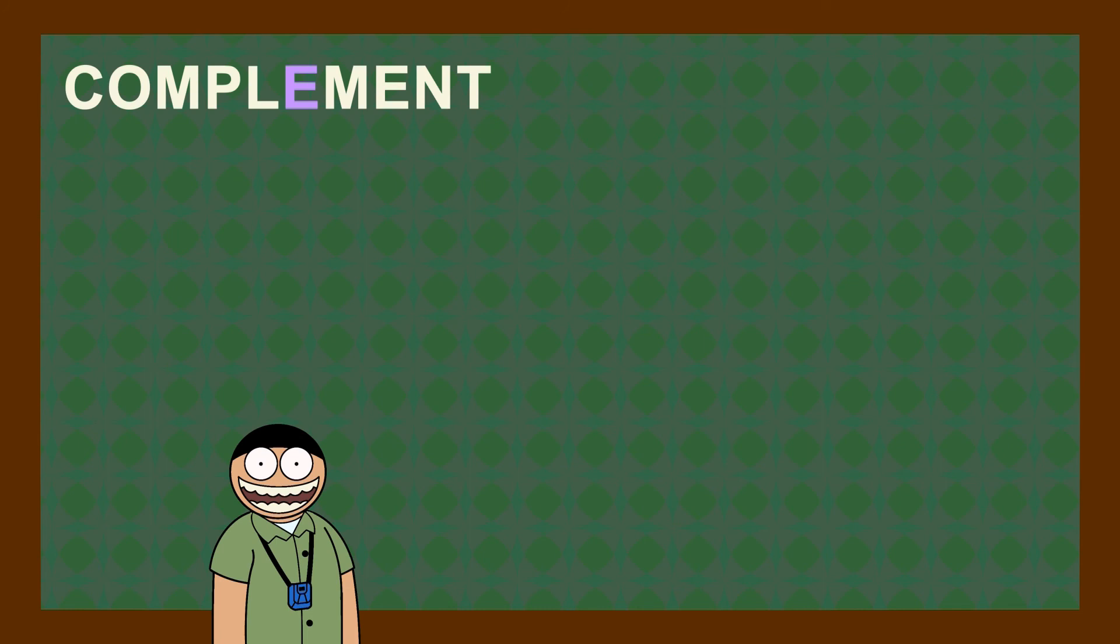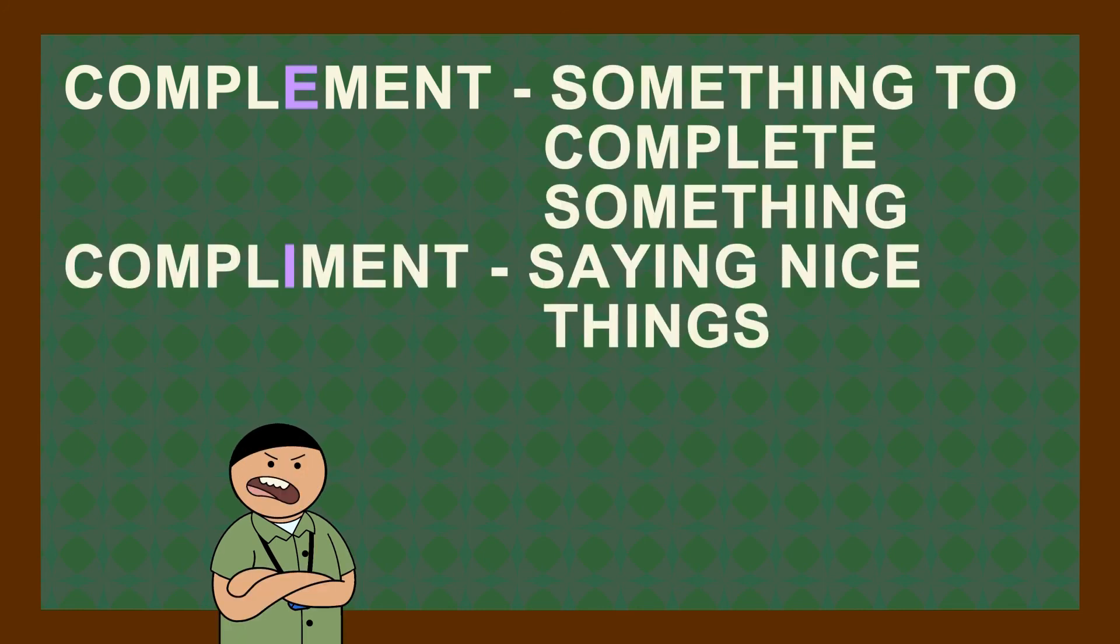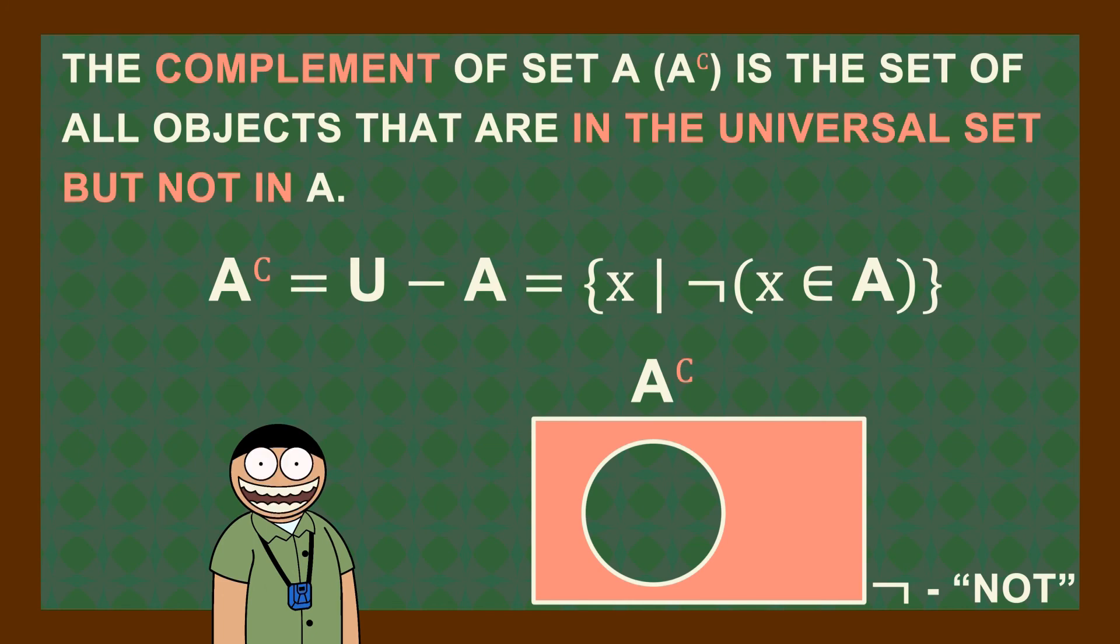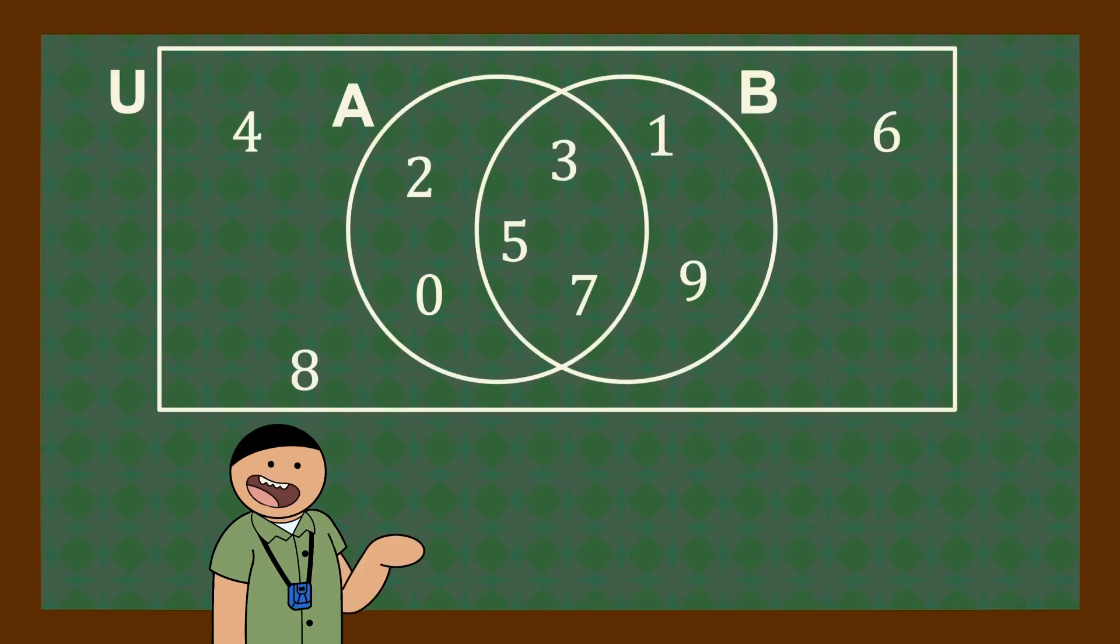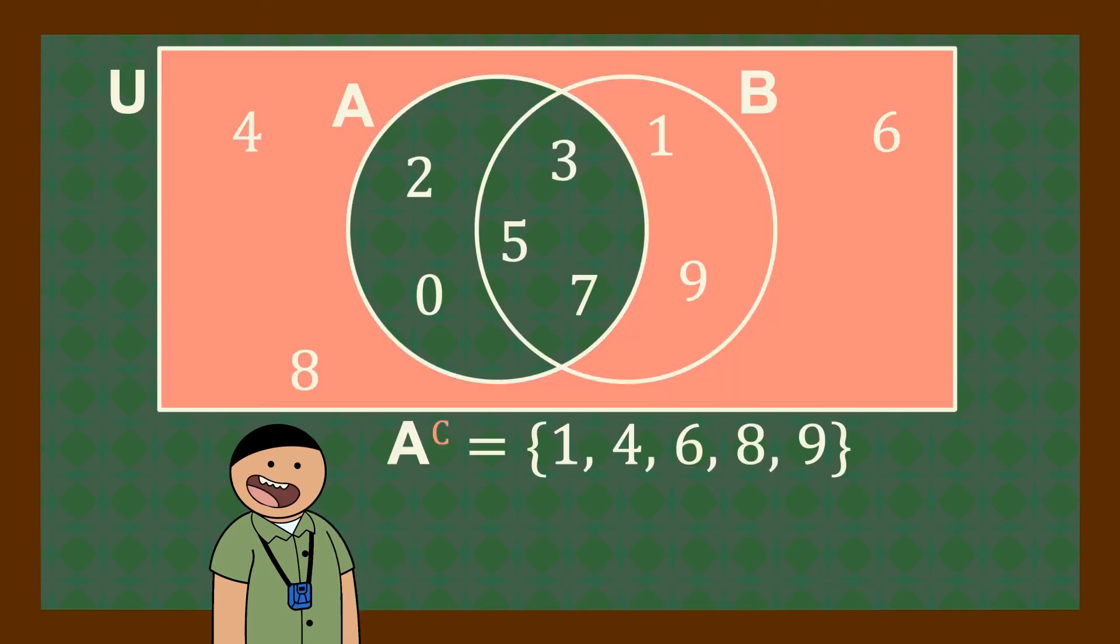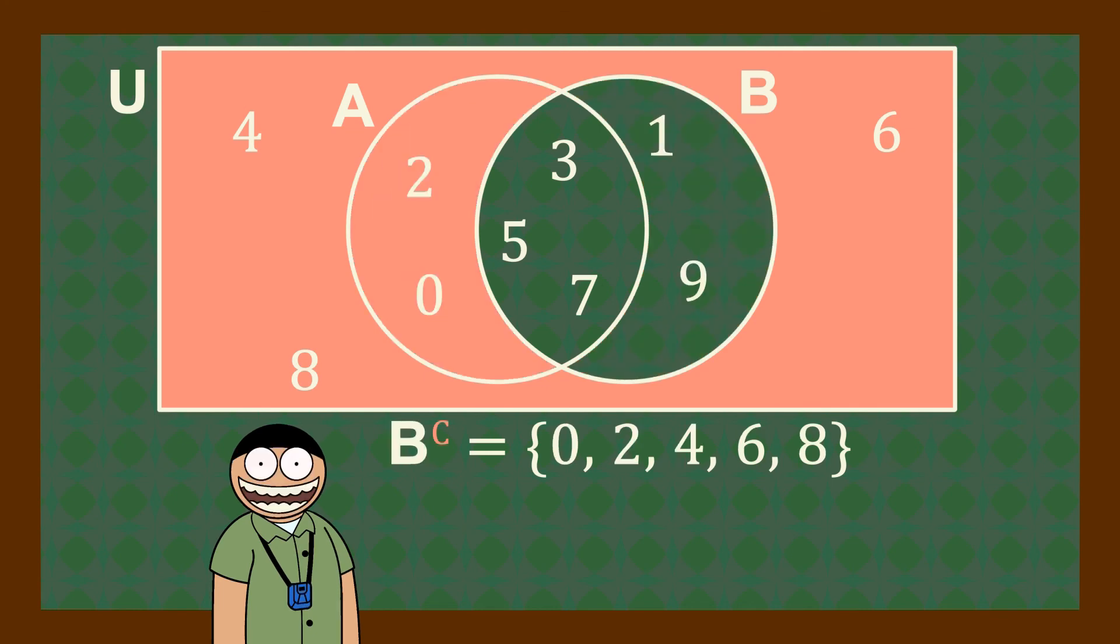The complement, and let me say it's not complement because complement is something to complete something while complement is saying nice things. The complement of set A is a set of all objects that are in the universal set but not in A. From the sets we have right now, here's the complement of A and here's the complement of B.